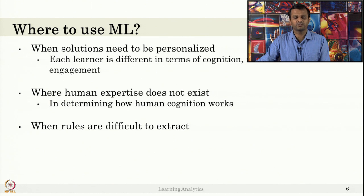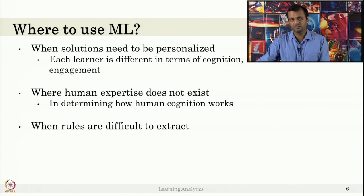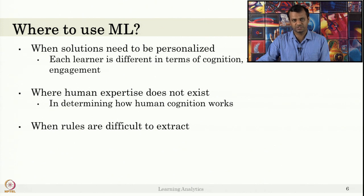For example, if you want to compare a student's attendance versus performance with only two variables, you might be able to say if attendance is more than 70 percent the student might pass. That kind of rule is possible — an if-else rule or filtering rule. But if the number of variables is too many and humans cannot create hypotheses or rules from the data, then machine learning can be used.